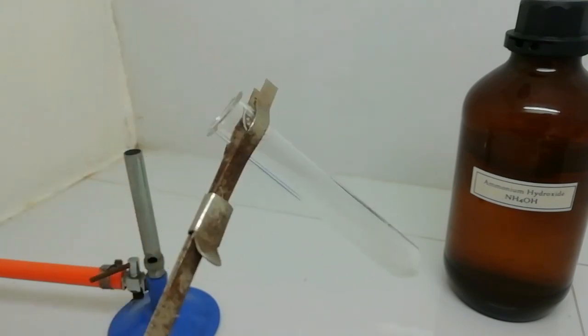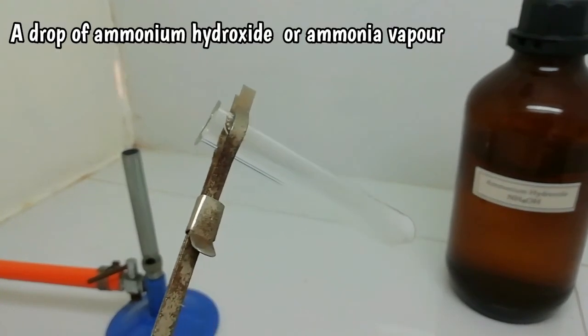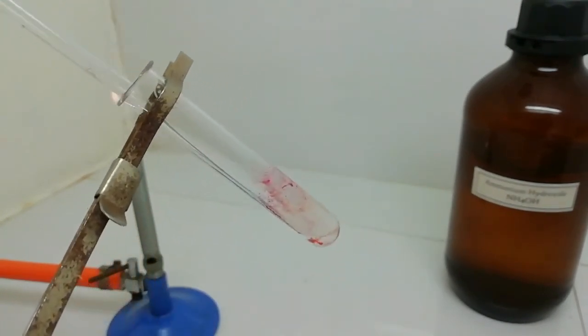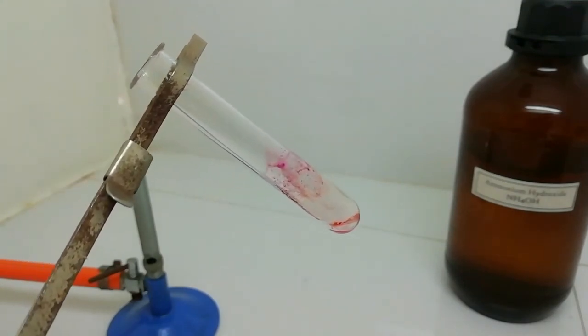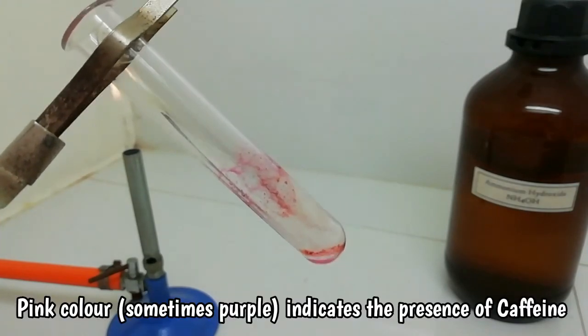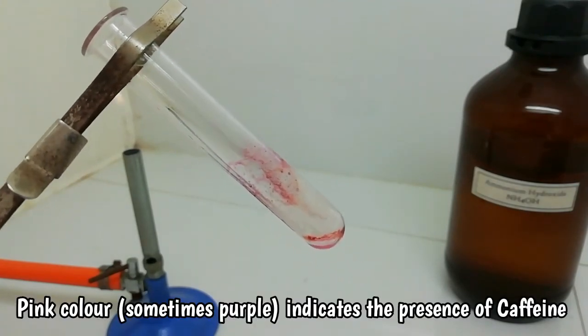Now the tube is dry. Now we need to introduce a drop of ammonia. In that case you can see a purple-pink color appears—that indicates the presence of caffeine.